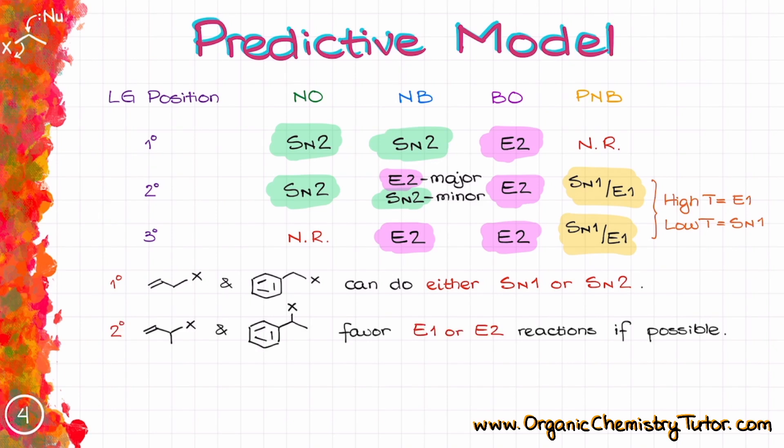The secondary allylic and benzylic substrates, they typically favor the elimination reactions when possible, of course. Due to the additional stability of the resulting conjugate system, the E2 is more favorable than the SN2, even with weaker bases in these cases. For the same reason, E1 pathway is more favorable than SN1.